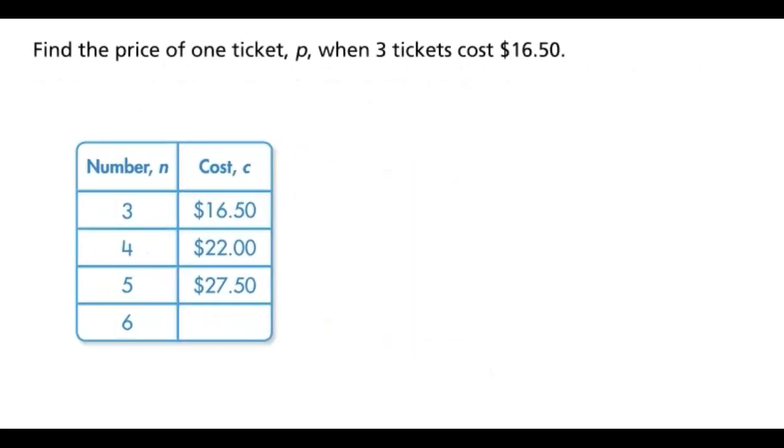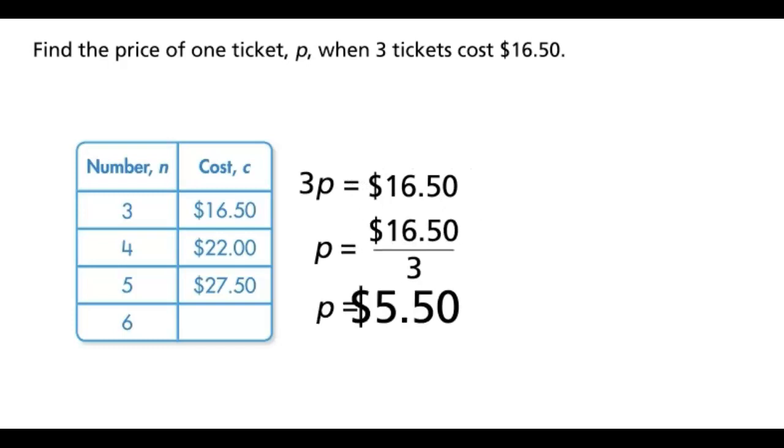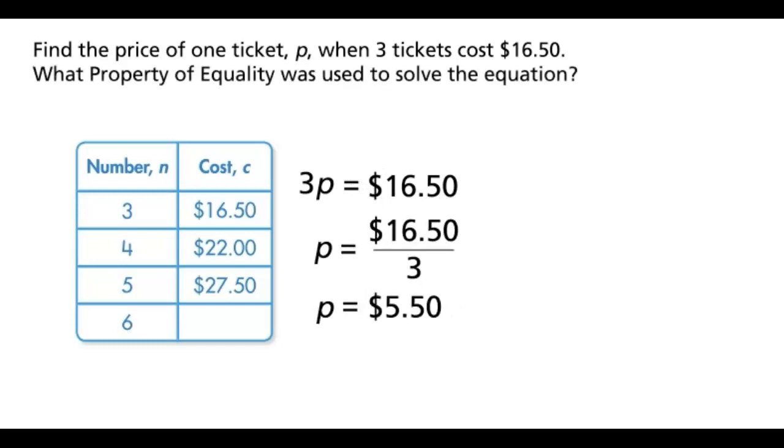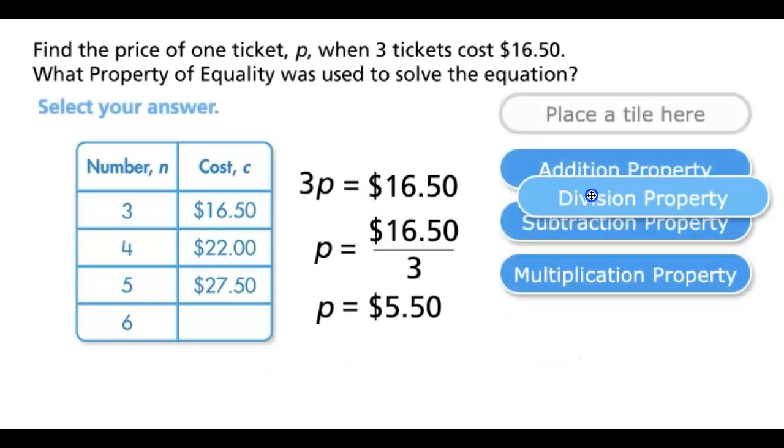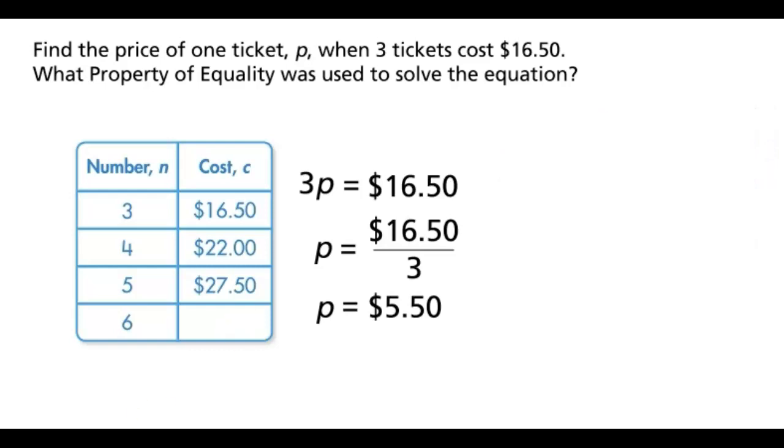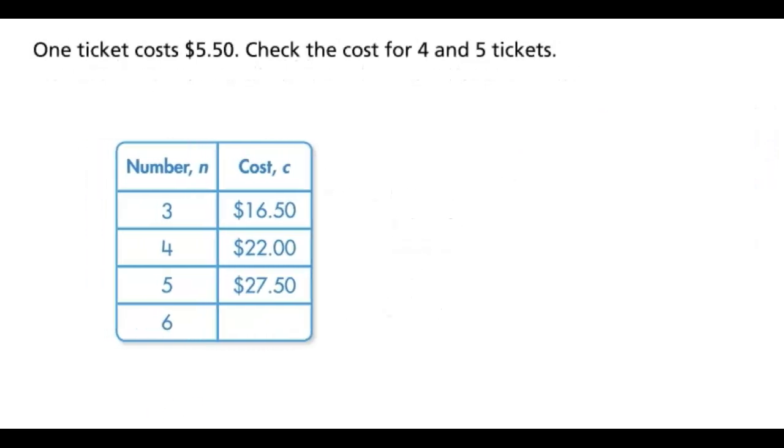Find the price of one ticket p when 3 tickets cost $16.50. What property of equality was used to solve the equation? Select your answer. One ticket costs $5.50. Check the cost for 4 and 5 tickets.